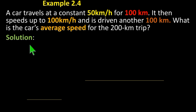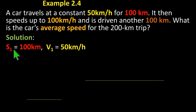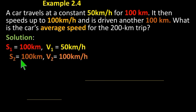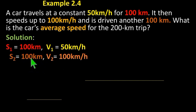Solution: Distance 1 is equal to 100 km, speed 1 (V1) is equal to 50 km per hour. Second distance is equal to 100 km, V2 is equal to 100 km per hour. Total distance traveled is 200 km.